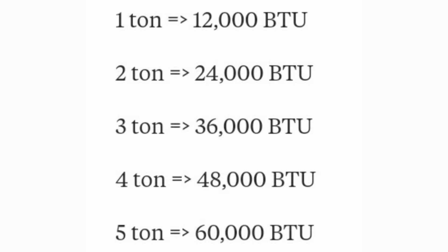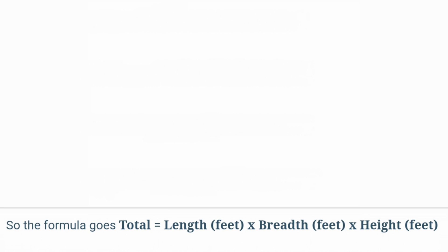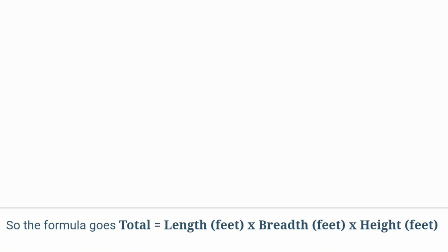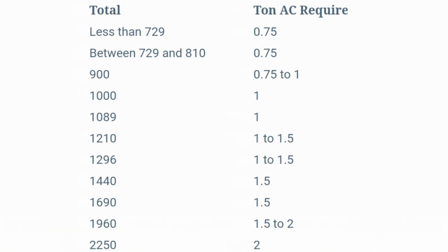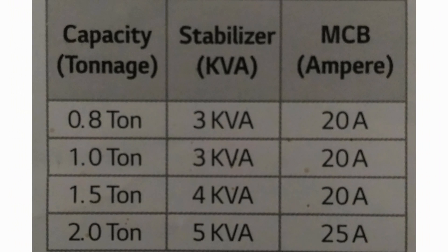These are BTU measurements along with ton. The formula is the product of length, breadth, and height in units of feet. According to the total, we can select the tonnage. These are the stabilizer and MCV requirements for the AC according to the tonnage.